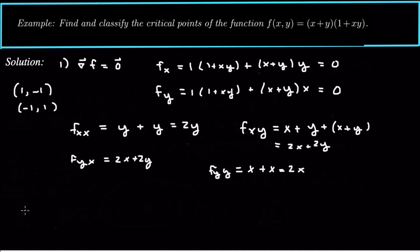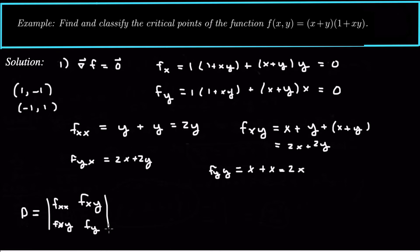The discriminant is the determinant with f xx, f xy on top and f xy, f yy on the bottom. If d is greater than zero and f xx is greater than zero, we have a minimum. If d is greater than zero and f xx is less than zero, we have a maximum. And if d is less than zero, we have a saddle point.